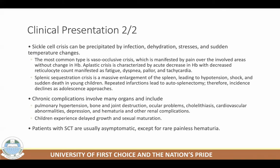Aplastic crisis is characterized by acute decrease in hemoglobin with decreased reticulocyte counts, manifested as fatigue, dyspnea, pallor, and tachycardia. In aplastic crisis, the person is easily fatigued — sometimes you may dismiss it as a symptom of depression, but most patients will tell you they're in a crisis. When a patient is telling you what they're experiencing, it's important to respond, because with aplastic crisis the fatigue, dyspnea, and inability to breathe are the most clinically identifiable symptoms.